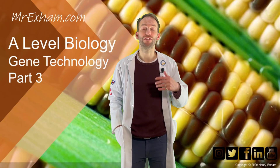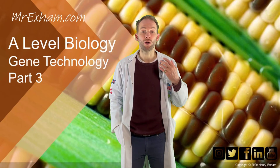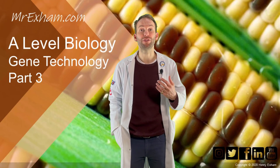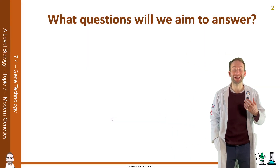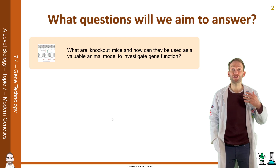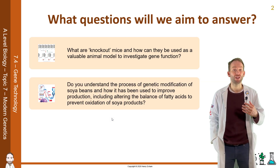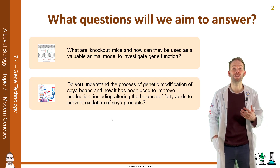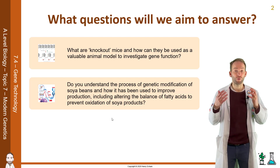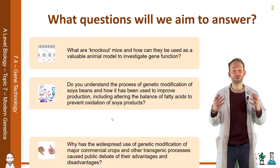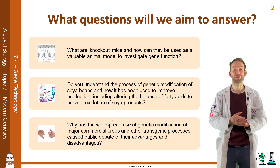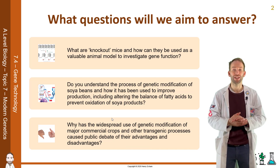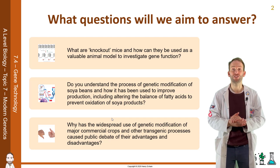This is the topic of gene technology. We'll look at what knockout mice are and how they can be used as a valuable animal model to investigate gene function. We will look at the genetic modification of soybeans and how it can be used to improve production, including altering the balance of fatty acids and the prevention of oxidation of soy products. We will look at the widespread use of genetic modification of commercial crops and other transgenic processes and how they have caused public debate, and what the advantages and disadvantages are.